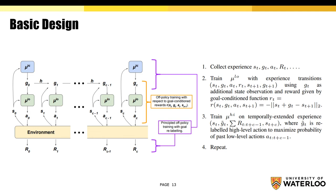Here we see a diagram of the basic design of HIRO. The high-level policy gives goals to the low-level policy. The low-level policy provides actions to the environment, which gives its state back to both the low-level and high-level policies, and also provides rewards. For each time step, H is applied to the goal so that the goal transitions over time. Once C time steps are accomplished, the high-level policy provides a new goal for the low-level policy.